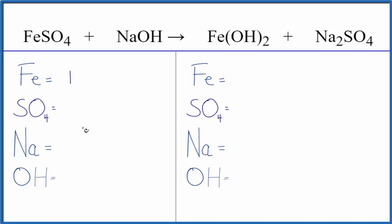We have one Fe, and then we're going to use a bit of a trick here. This is a double displacement reaction. So this sulfate here, this SO4, we have it here, and we have it here.